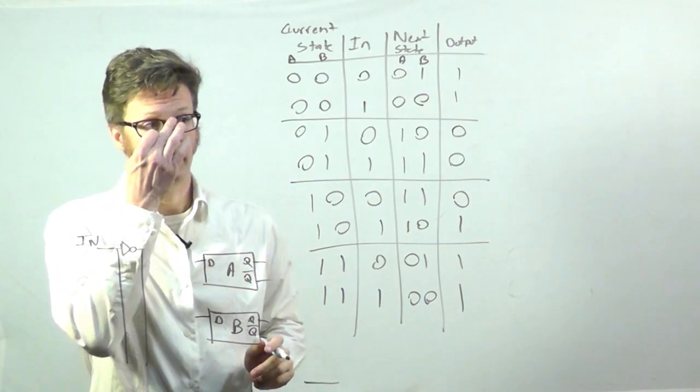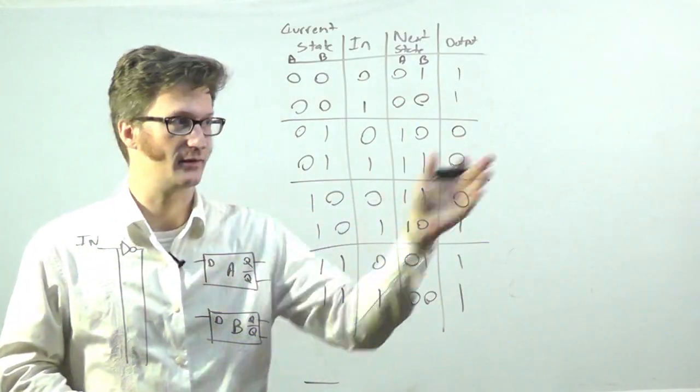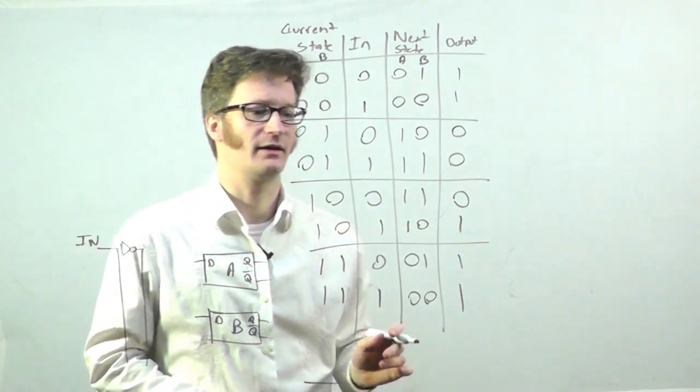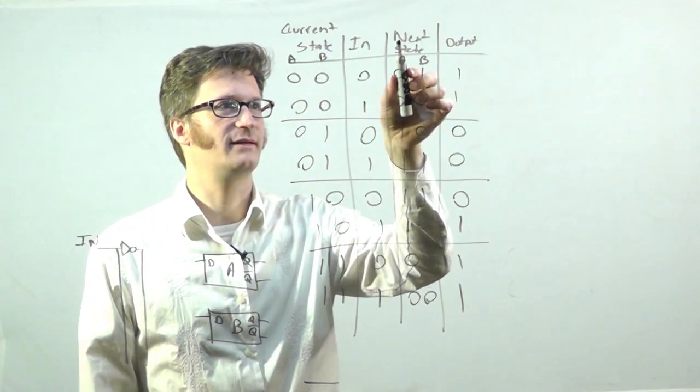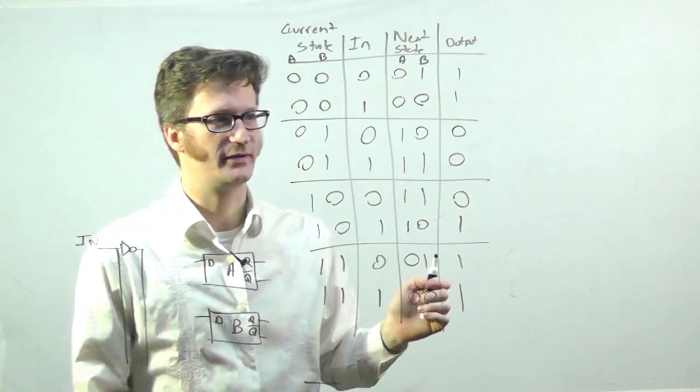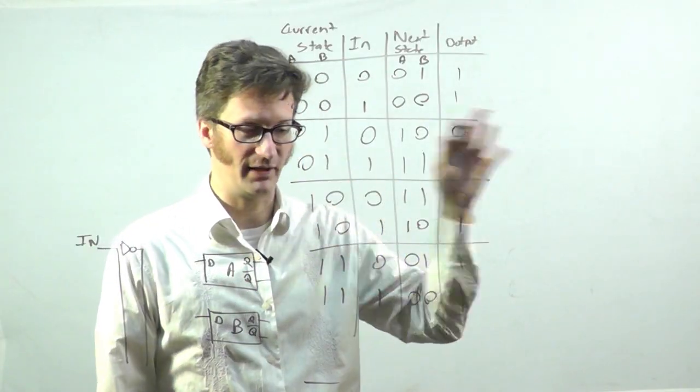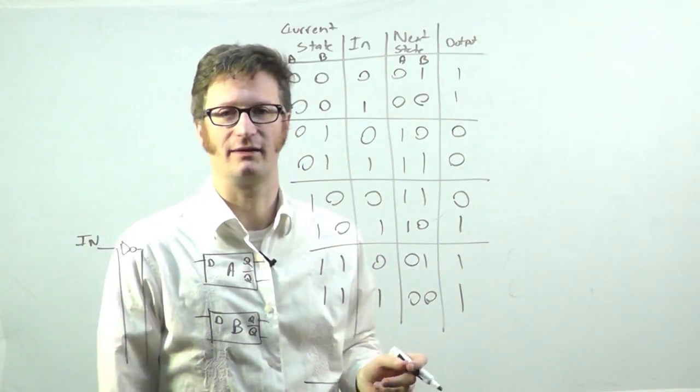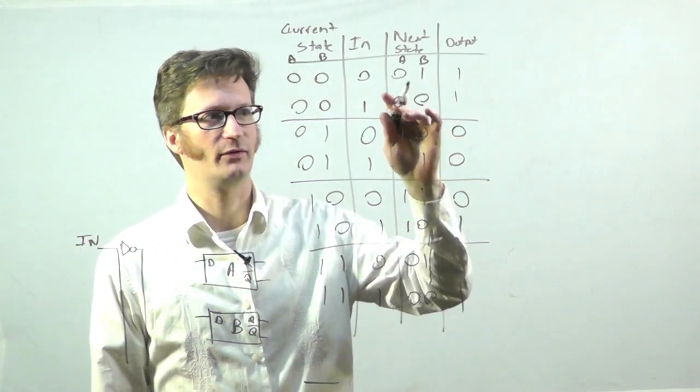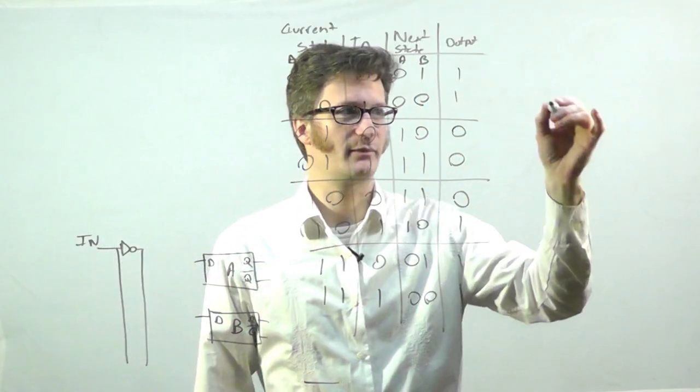So, the goal is, in order to create the circuit that I described, this state diagram that was here, how do I connect all this together? And so, what I'm going to do is, this is my next state for A. And the beauty of a D flip-flop is, whatever I put on its D input becomes the output on the next clock edge. And so, what I'm going to do is, I'm going to take this column here, and I'm going to make a Karnaugh map.